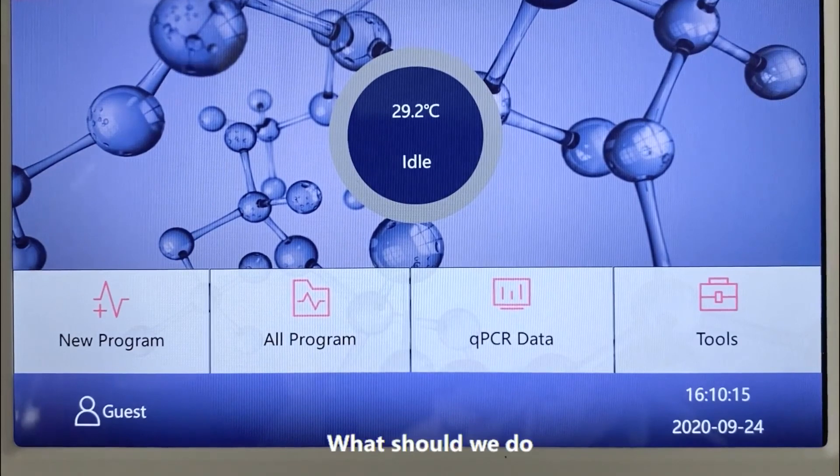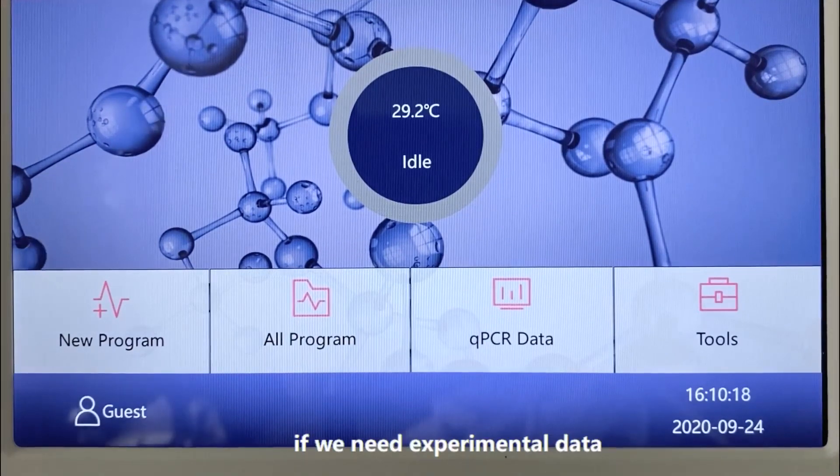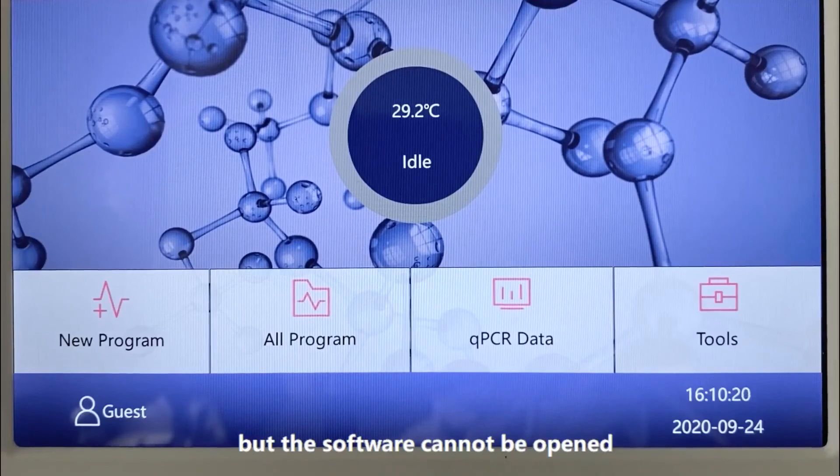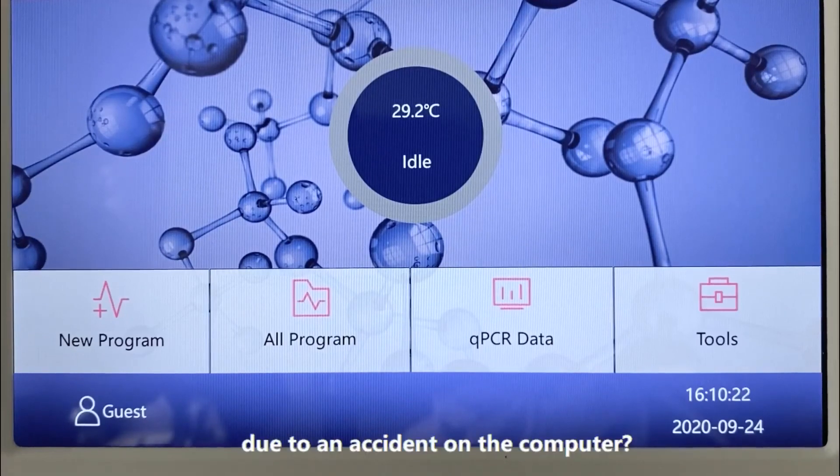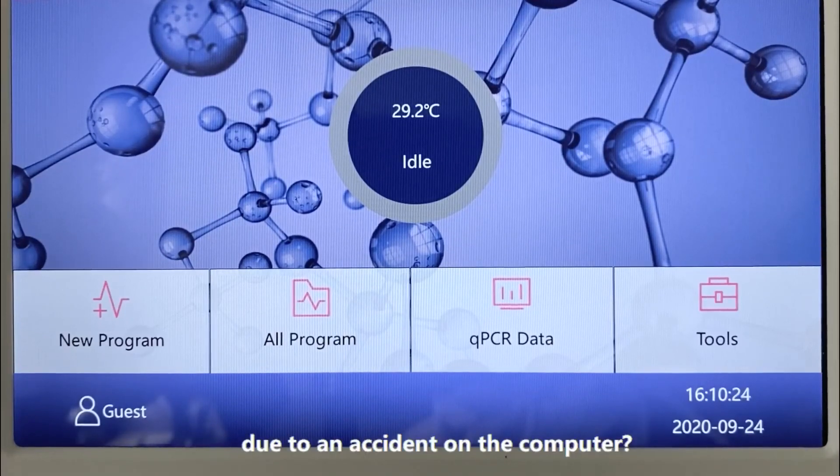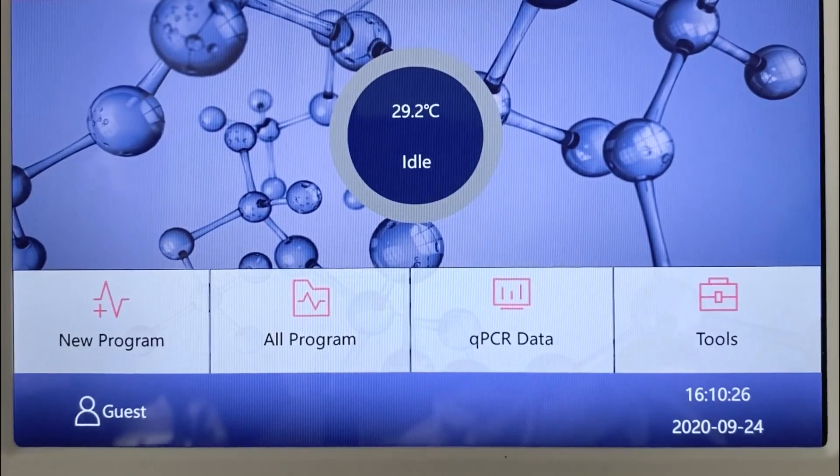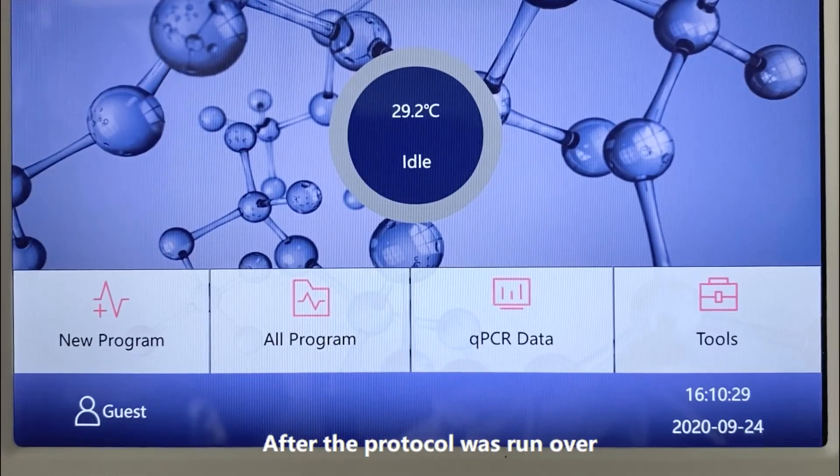What should we do if we need experimental data, but the software cannot be opened due to an accident on the computer? After the protocol is run over, please use the USB disk to copy out the data.